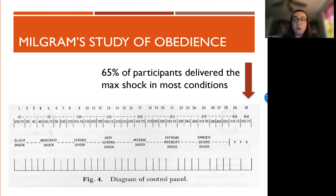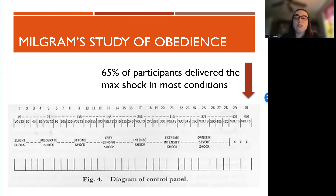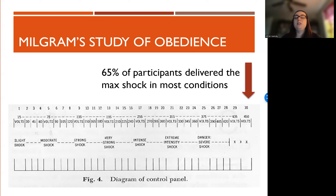Another issue is that participants have the right to withdraw from a study at any time with no repercussions. When you do SONA — the research participation system for this class — you will see a statement saying you may leave this study at any time with no consequences. Milgram messed up there. When the participant hesitated or asked to leave, the experimenter responded with verbal prompts like 'Please continue,' 'It is absolutely essential that you continue,' 'You have no other choice,' 'You must go on.' It's not that Milgram was purposely violating these ethical issues — they didn't exist at the time. These ethical rules exist now partially in response to Milgram's work.